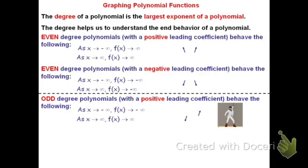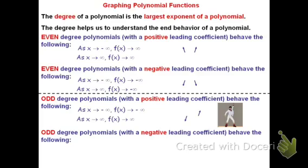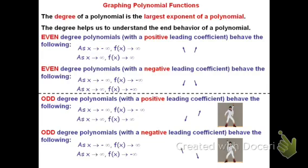If it's an odd degree polynomial with a negative leading coefficient, then it's going to be the reverse. As x goes to negative infinity, f goes up towards infinity, and as x goes to positive infinity, f goes down towards negative infinity. It's the reverse.